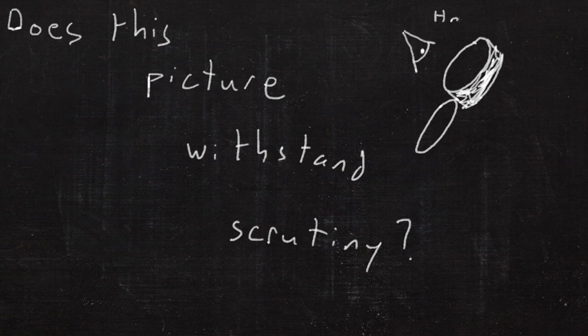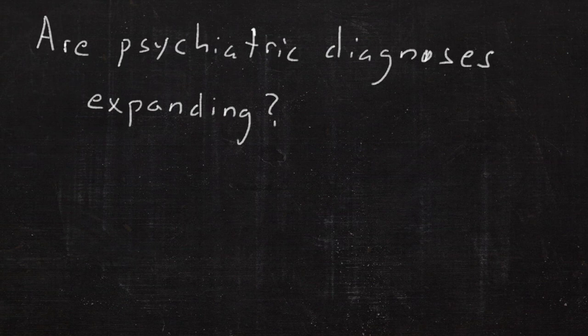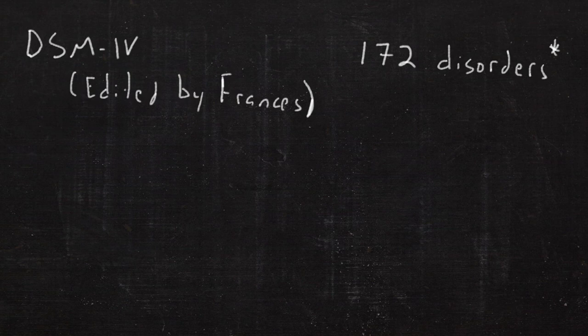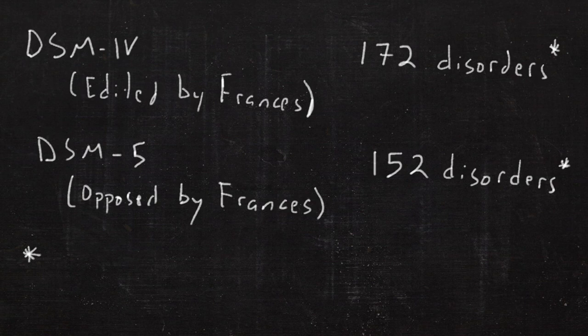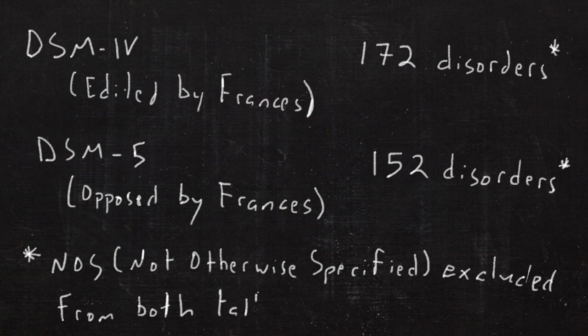Let's take a closer look. So the first thing we need to ask ourselves, are psychiatric diagnoses expanding? Well, the DSM-IV, which was edited by Francis, had 172 disorders when you exclude the unspecified diseases. DSM-V, opposed by Francis, actually only has 152 disorders when you exclude the unspecified categories.